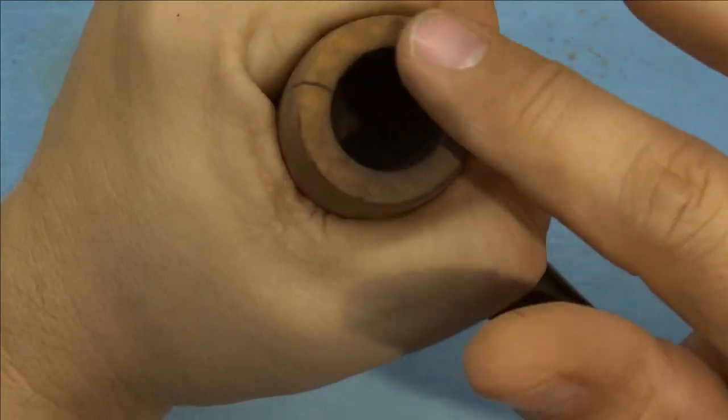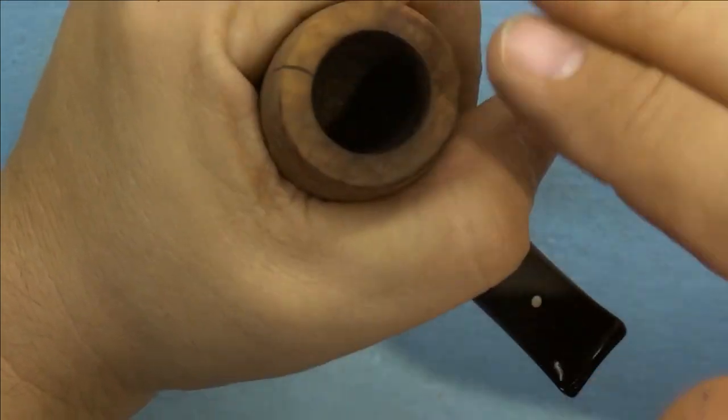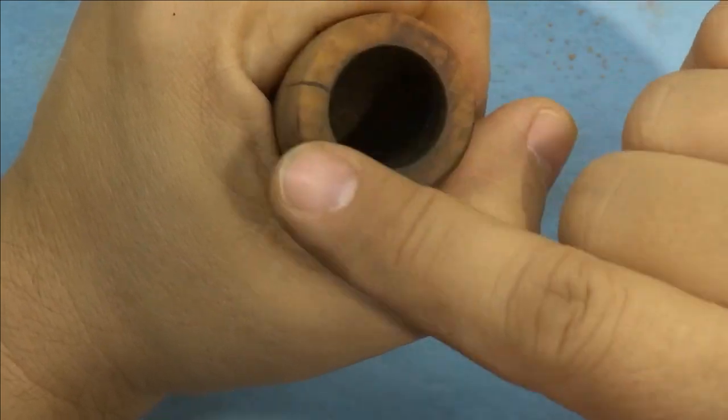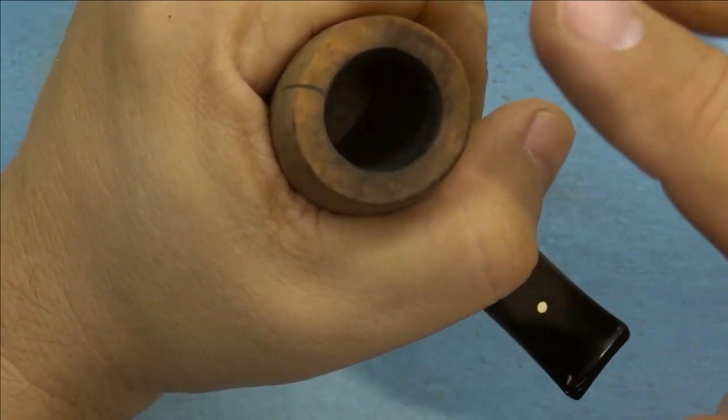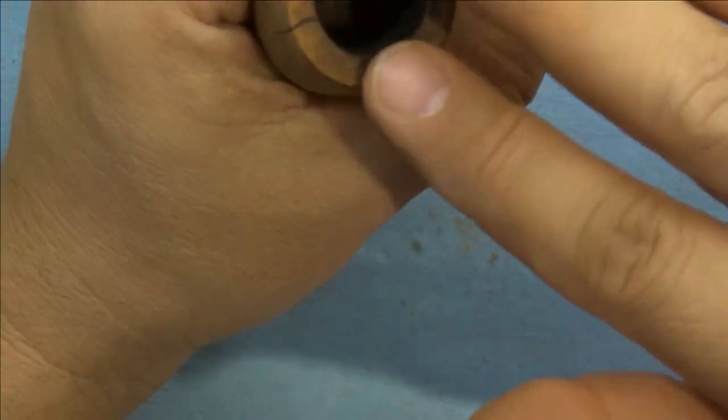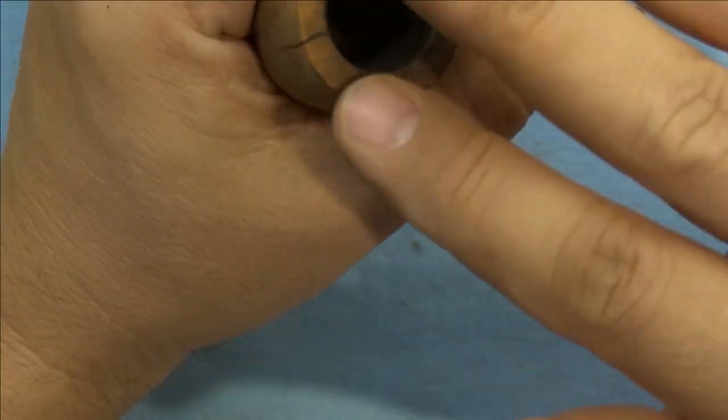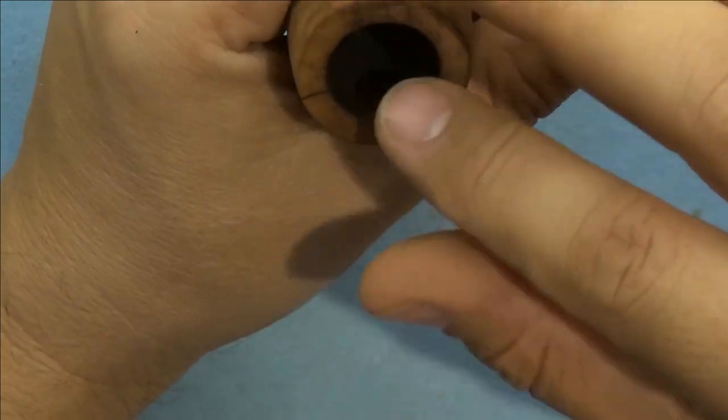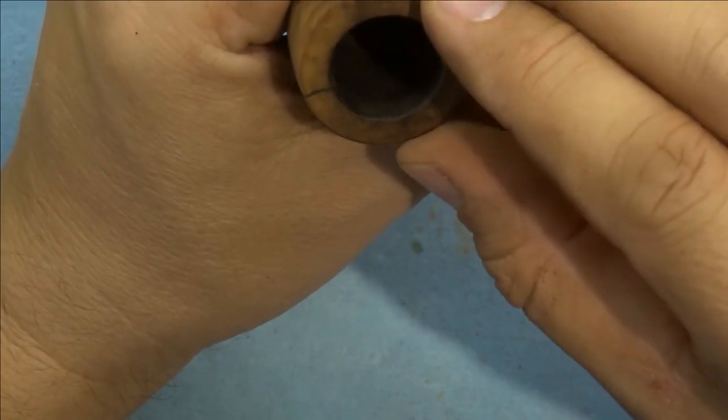I also topped the bowl a bit. I didn't do a really deep topping where all the charring would be removed - I want to maintain the shape of the bowl and just make sure it was flat and get rid of the bulk of buildup on the rim.